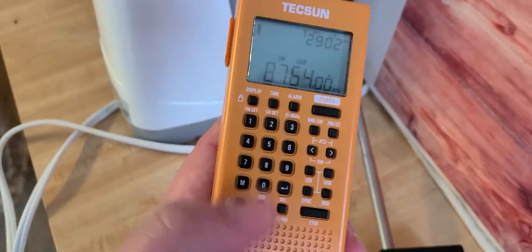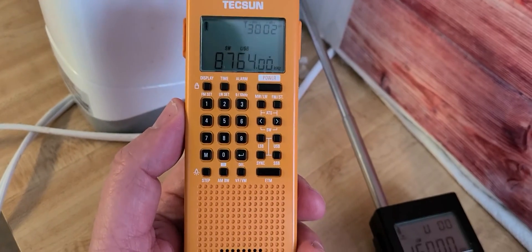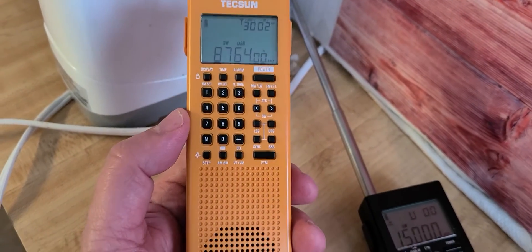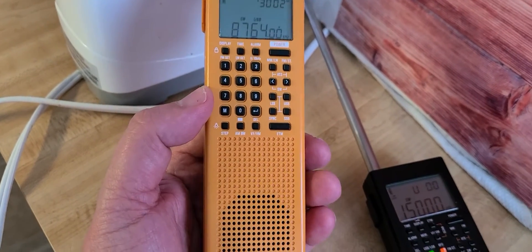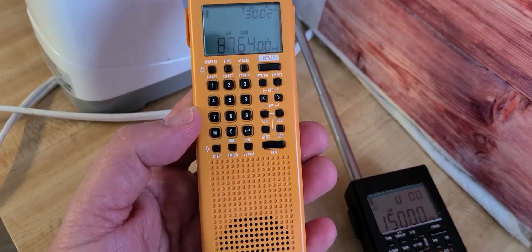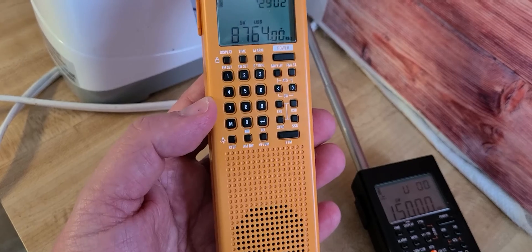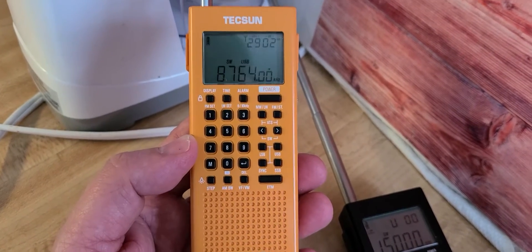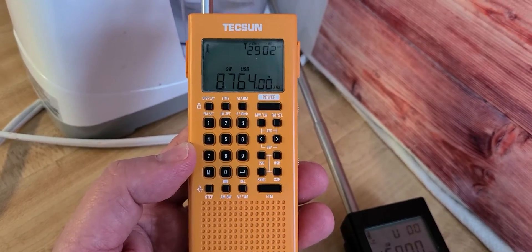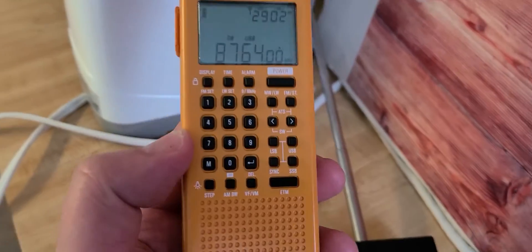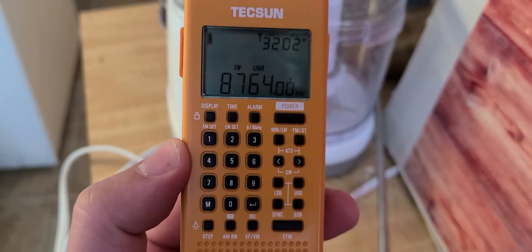So this makes tuning SSB even more interesting and accurate on the Texant PL368. Note that I did not touch calibration or anything and it is already perfect on the single sideband tone. 8-7-6-4-0-0 and it sounds great.